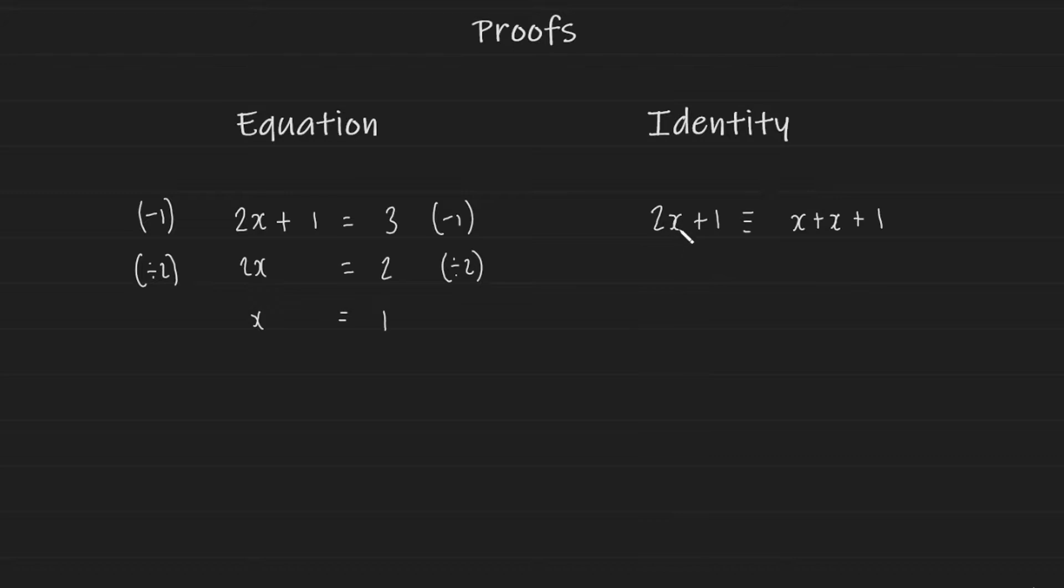You can see here that on the left-hand side, we have 2x plus 1. On the right-hand side, we have x plus x plus 1, which if you were to simplify, would give you 2x plus 1. Trying to solve an identity is futile. Look what happens when you try and solve it. You end up with something like 1 is equivalent to 1.